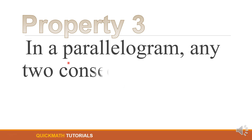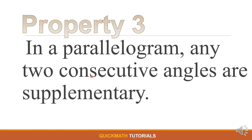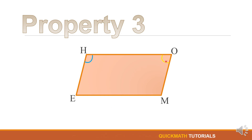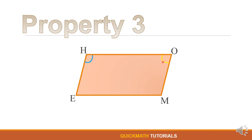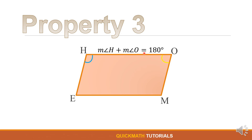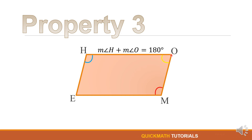The third property is: in a parallelogram, any two consecutive angles are supplementary. In illustration, the consecutive angles H and O are supplementary — when we say supplementary, the sum of the two angles equals 180 degrees. So we have: the measure of angle H plus the measure of angle O is equal to 180 degrees. Another pair: the measure of angle O plus the measure of angle M is equal to 180 degrees.